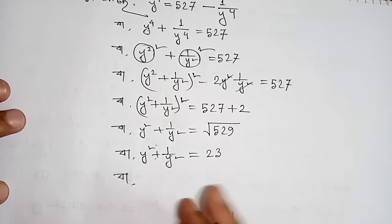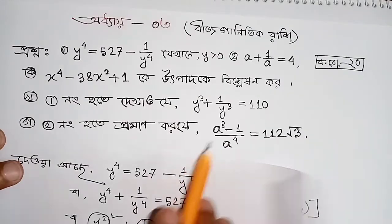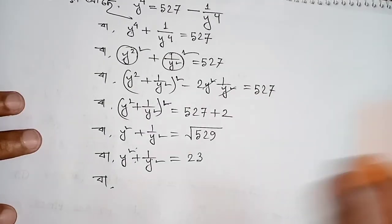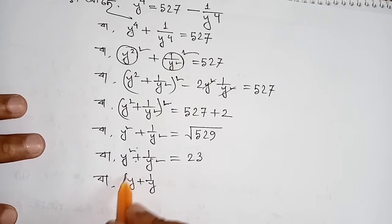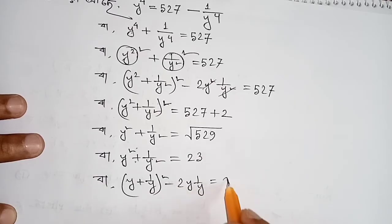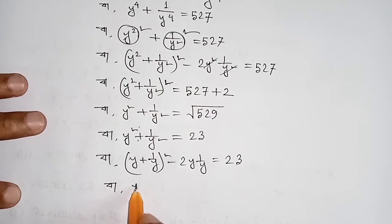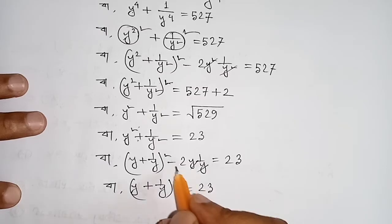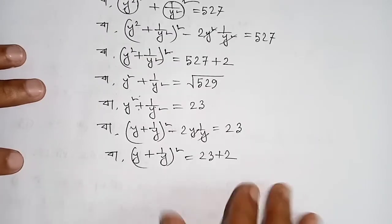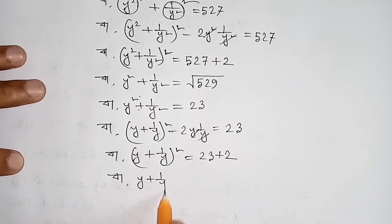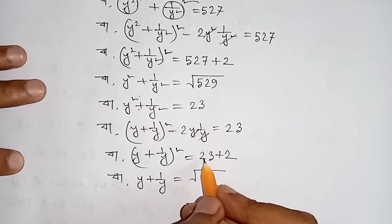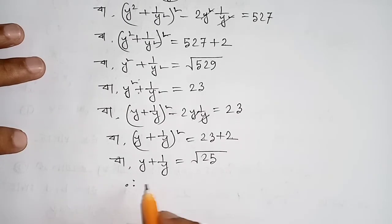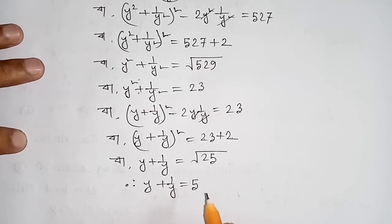It looks like a square plus 2 square plus 2 square plus 1 square plus 1 plus the minus. We use a square plus b square root of a plus b square minus 2ab equals 23. So 2y plus 1 by y whole square equals 23 minus 2 plus 2. Then 2y plus 1 by y whole square, square root gives 23 plus 2 = 25, so y plus 1 by y equals 5.